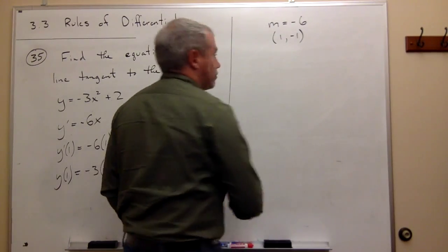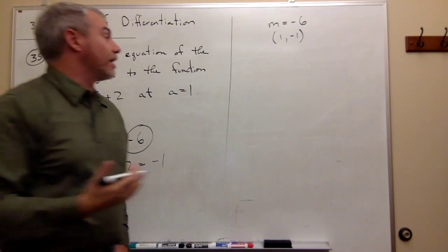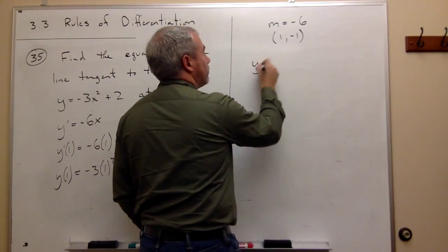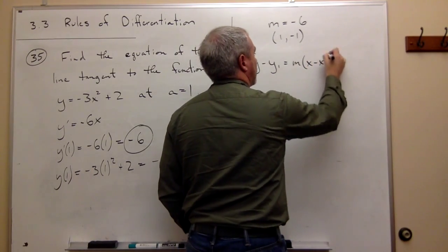Now I can use the point-slope equation of the line. I say y minus y1 equals m times x minus x1.